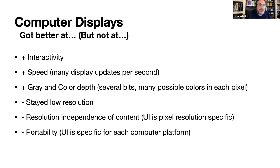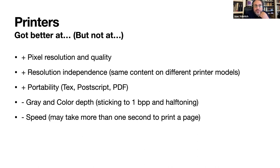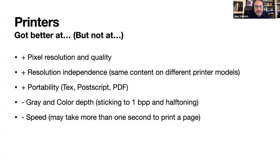User interfaces started to be designed specifically for a computer platform and for a pixel resolution, with content made at specific pixel sizes. On the other hand, printers got better at pixel resolution. Laser printers and most printers started to be able to do very high quality, very high resolution output. That forced making everything resolution independent. Nobody ever had trouble with stuff looking different on a 300 dpi printer versus a 1200 dpi printer. So portability was a reality almost from the start, with systems such as TeX, PostScript, and PDF.